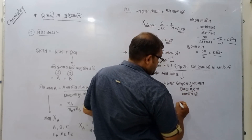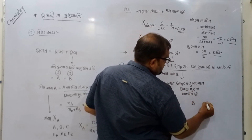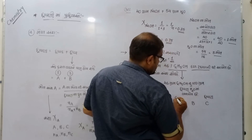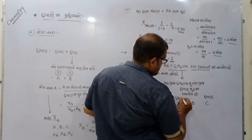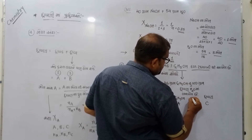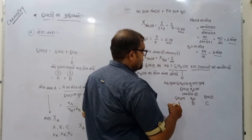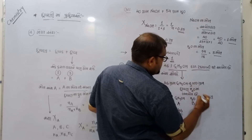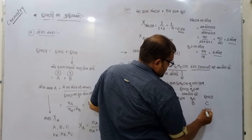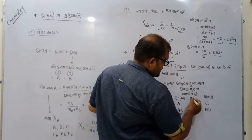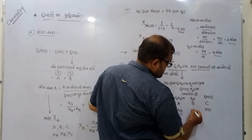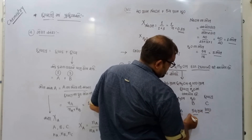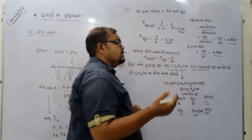A = Ethanol (દ્ ર ા વ ્ ય), B = H2O (દ ્ ર ા વ ક). 46 ગ ્ ર ા મ Ethanol — 100 ગ ્ ર ા મ દ ્ ર ા વ ણ. H2O = 100 − 46 = 54 ગ ્ ર ા મ.